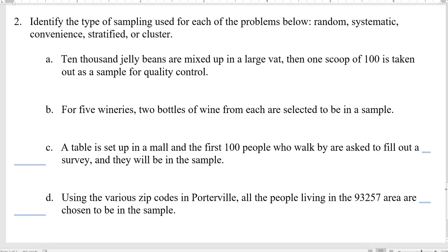Let's apply these definitions. Is this random, systematic, convenient, stratified, or cluster? 10,000 jelly beans are mixed up in a large vat. Then one scoop of 100 is taken out as a sample for quality control. Cluster sample says I sample and I choose the entire group. Is that what happened? Did we choose a random group and then compare the entire group? I'm okay with that. I'll have some people go simple random, and then I have to ask the question, did we number every jelly bean? Did every jelly bean get numbered and then randomly chosen? We don't do that. We chose a cluster or a grouping of them.